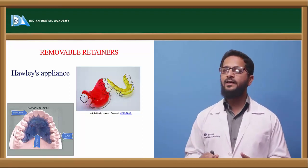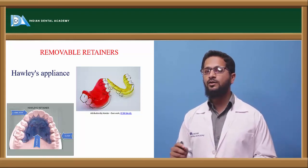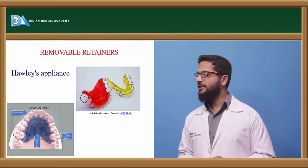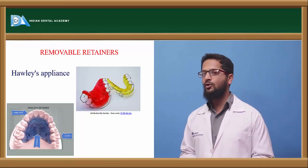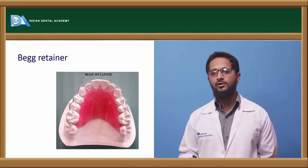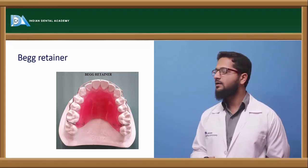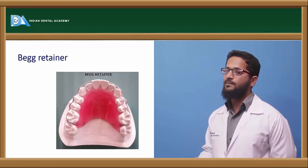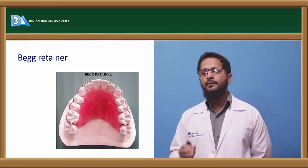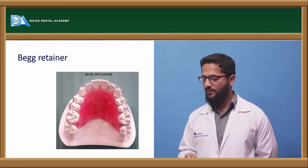The Hawley appliance labial bow can be soldered to the bridge of the Adams clasp. Modifications in the acrylic portion are also possible, such as a Hawley appliance with an anterior bite plate or with a posterior bite plate. The Begg retainer also consists of a labial wire but it extends till the last erupted tooth, curves around it, and gets embedded in acrylic. It can be constructed till the first molar or the last erupted molar. This was introduced to overcome the drawback of the Hawley retainer, where crossover bows risk reopening spaces.